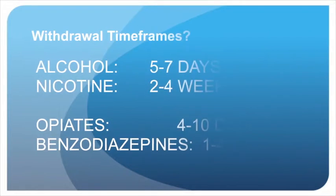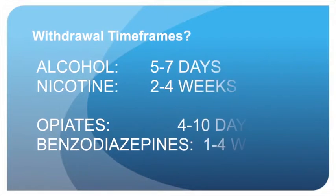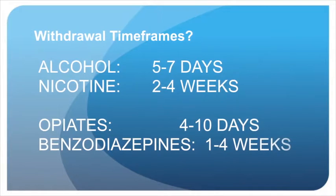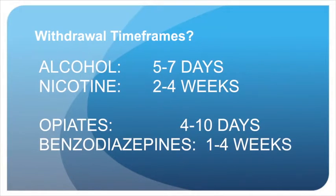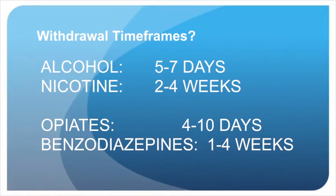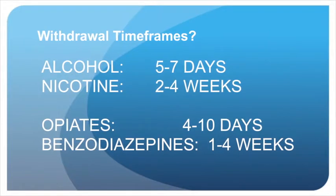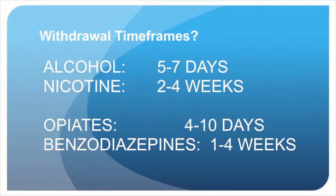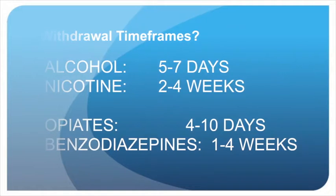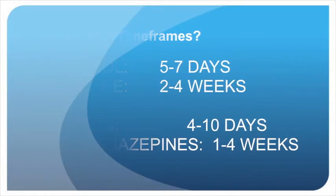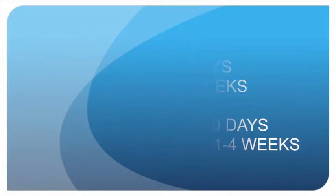What are the timeframes from the onset of withdrawal to the cessation of withdrawal effects? For alcohol it's approximately 5 to 7 days. For nicotine and cigarettes it's about 2 to 4 weeks. For opioid medications it's about 4 to 10 days, and for benzodiazepines such as diazepam and alprazolam it's 1 to 4 weeks.